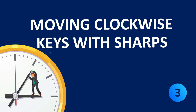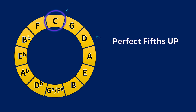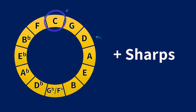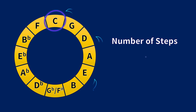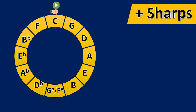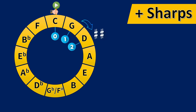Moving clockwise: keys with sharps. Our anchor point is C at 12 o'clock. Moving clockwise around the circle of fifths we move up in perfect fifths. As we move clockwise, each key gains one sharp. The number of steps taken clockwise tells you how many sharps the key will have. C major has no sharps or flats. One step clockwise gives G major — one sharp. Two steps gives D major — two sharps. A major has three sharps, E major four sharps, B major five, and F sharp major six sharps.